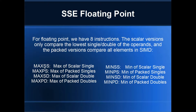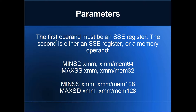The parameters for all of the instructions we're looking at today: the first operand is an SSE register which is both the source and the destination, and the second source is either an SSE register or memory. So you can use MEM64 if you're using SD, or MEM32 if you're using scalar single. For MinSS and MaxSD — minimum of scalar singles and max of scalar doubles — the second parameter can be a 128-bit memory operand.